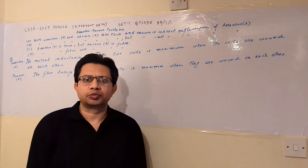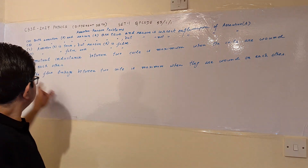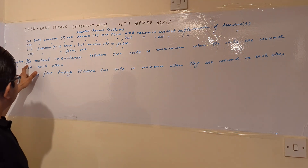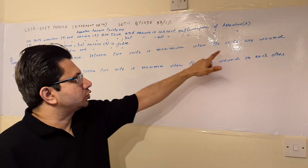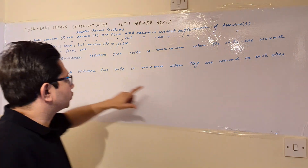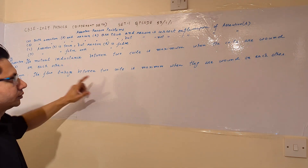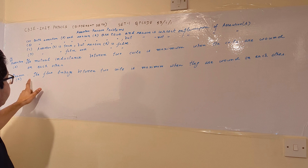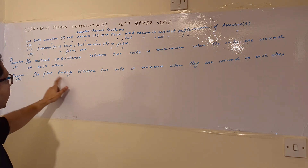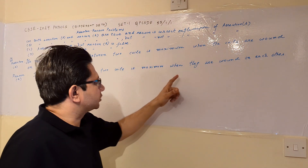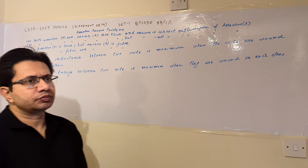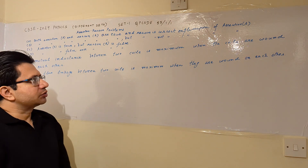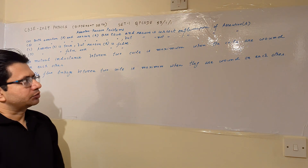Hello students, hope you are doing well. The question is an assertion-reason problem: the assertion is that mutual inductance between two coils is maximum when the two coils are wound on each other, and the reason is that the flux linkage between two coils is maximum when they are wound on each other.